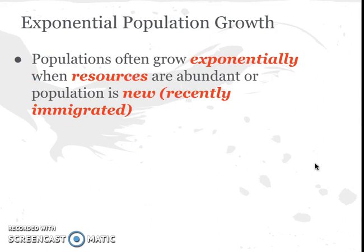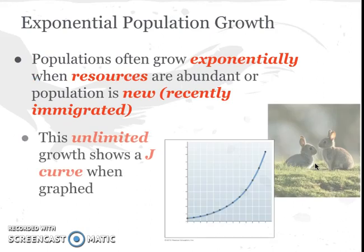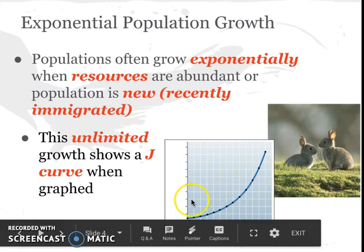The second type of population growth is called exponential population growth. This is when populations grow exponentially — when resources are abundant or there are lots of resources. It could also occur when organisms recently immigrated into a particular area. The shape seen on the graph is called a J-curve, because it kind of looks like a J, and that population just continually increases because there are plentiful resources.